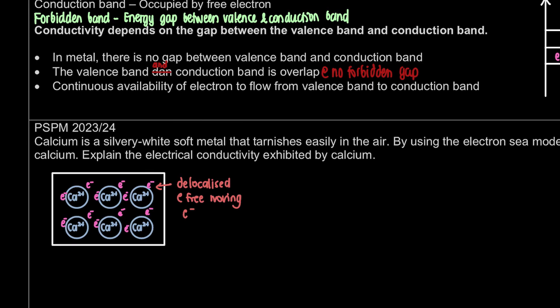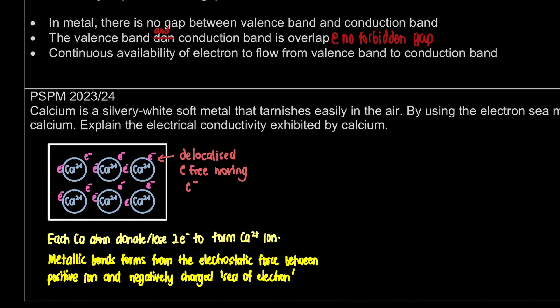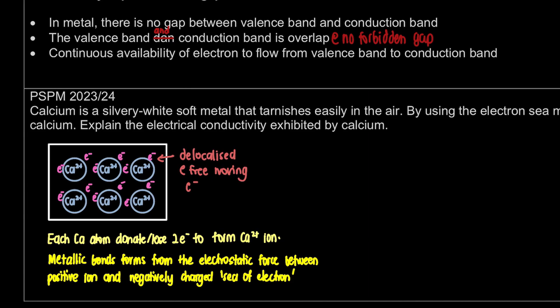After drawing the electron sea model, we need to explain it. For the explanation, first we mention that each calcium atom donates or loses two electrons to form Ca²⁺ ions. That's why we need a sea of electrons — so drawing just two ions is not enough; minimum six is needed to illustrate the sea.